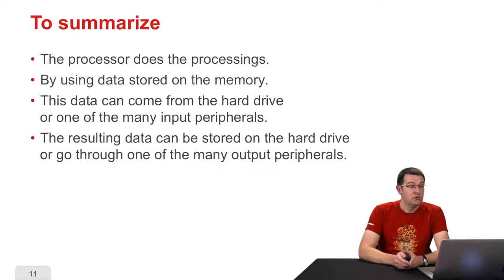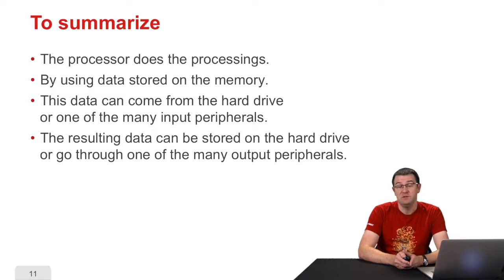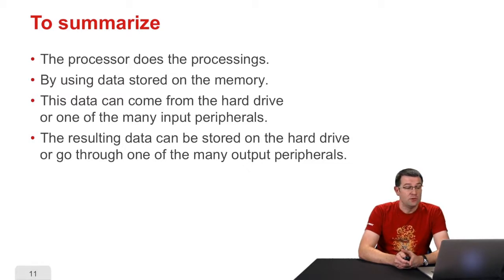What do you need to remember about this section? It is very important to understand that the processor performs all the processing — it is the machine's heart. Technically, it uses data stored mainly in the memory. That data can come from the hard drive most often, or from input peripherals such as the network card if receiving network communication, or from the mouse when clicking. The output data will also often go to the hard drive, or to an output peripheral like the network card if sending data to a distant server, or other output peripherals like the screen, the printer, etc.